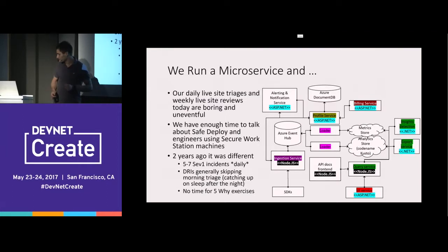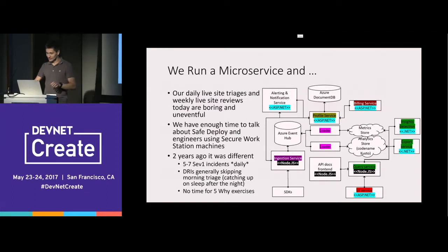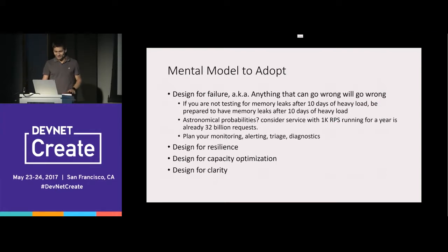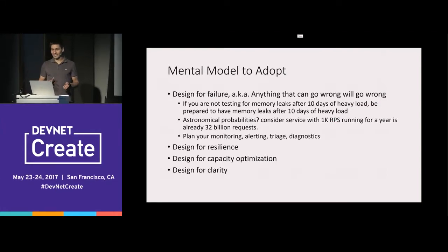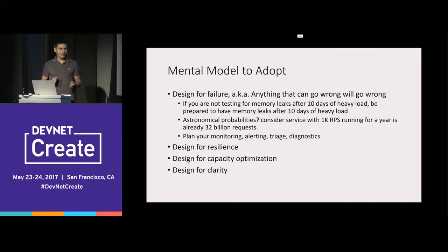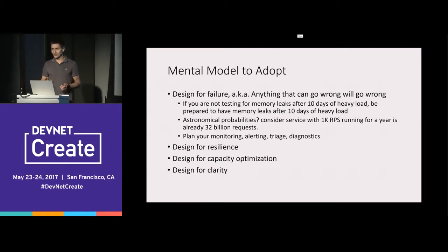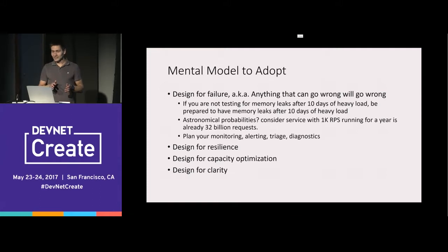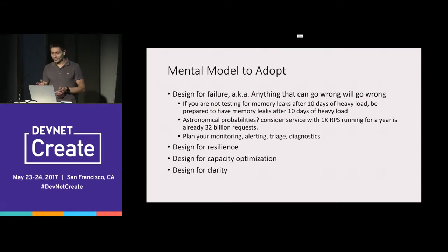The mental model to adopt starts with: design for failure. It's a cliché, but it's interesting how we forget when it comes to actual code. Anything that can go wrong will go wrong. There's a limit to what you can test for, but it's precisely the thing you don't test that will happen — if you don't test for memory leaks after 10 days of heavy load, that's exactly what you're going to have.